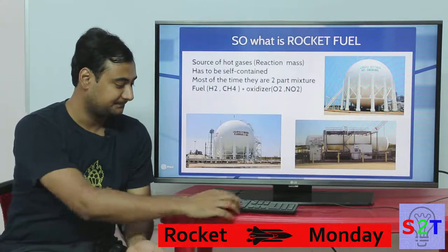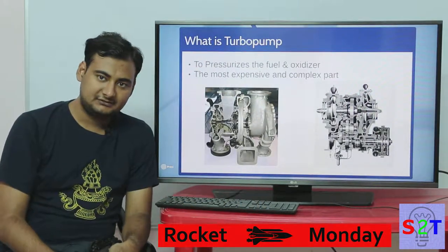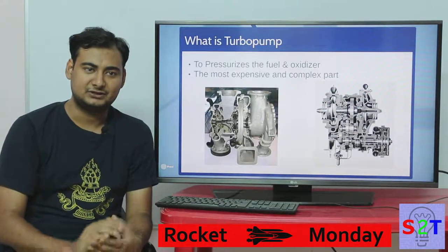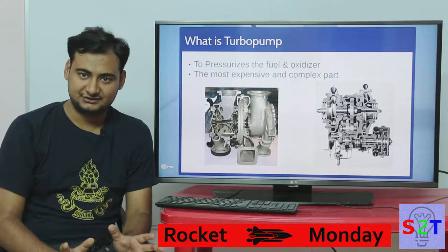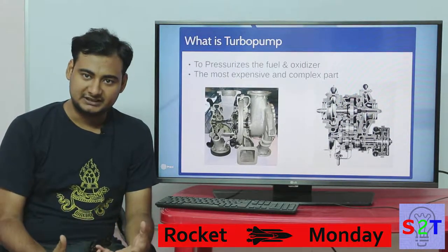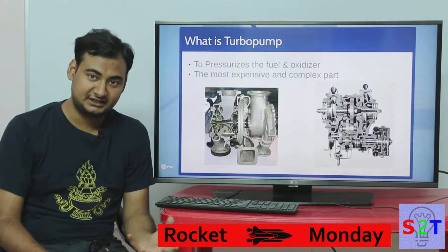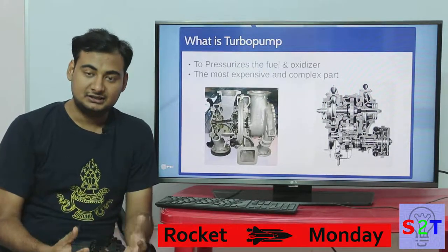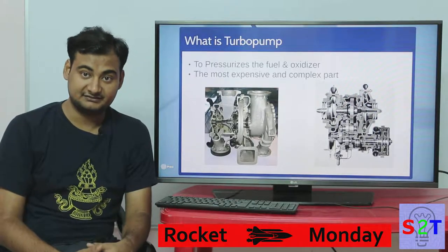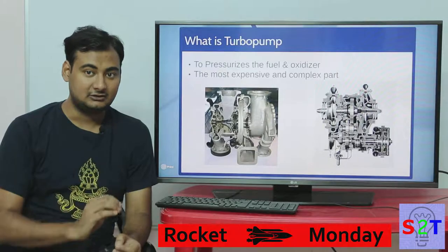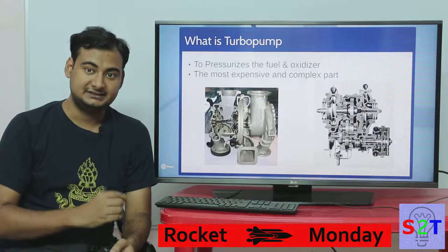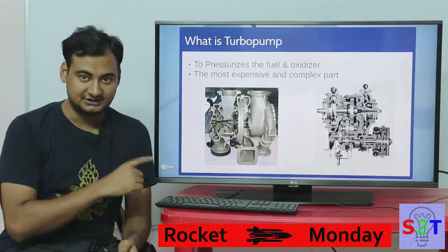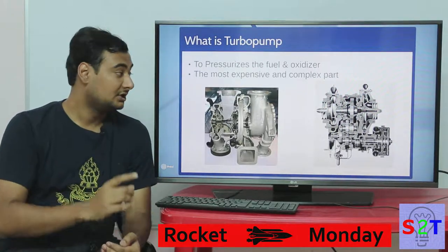Now we've looked at the fuel — how do we pressurize it? We use a turbo pump. Think of a turbo pump as a turbocharger, except it's much more complicated. It works at much more extreme temperatures: the cold side goes as low as liquid hydrogen temperature, and the hot side goes as high as the melting point of the metal. That's why these things are so expensive. They are also responsible for throttling the rocket engine — the computer tells the turbo pump to spin up faster for more power or slower for less power.